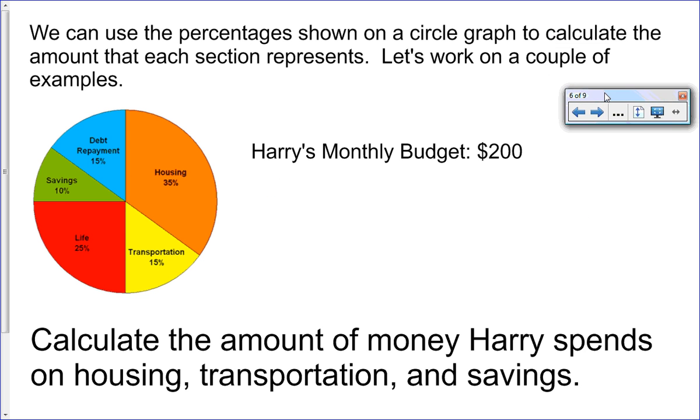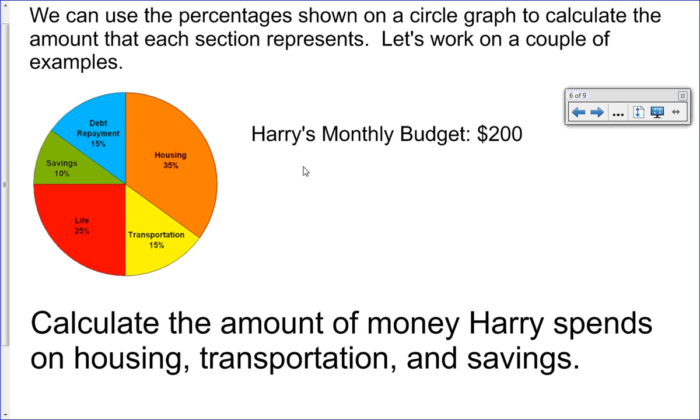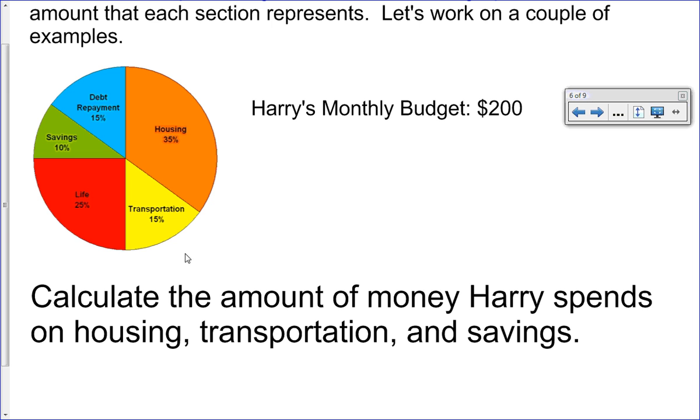We can use the percentages shown on a circle graph to calculate the amount that each section represents. Let's work on a couple of examples. So here is a circle graph showing Harry's monthly budget. He has $200 to spend each month and he has several commitments to make with that $200. Our challenge is to calculate the amount of money Harry spends on housing, transportation, and savings.